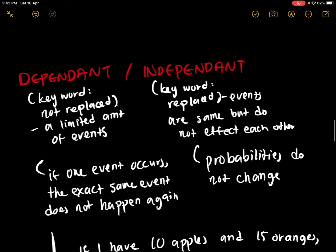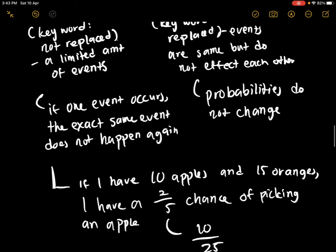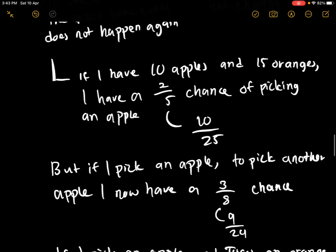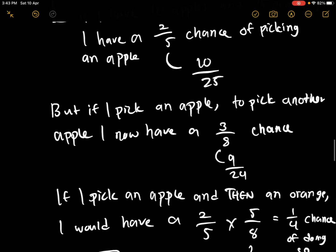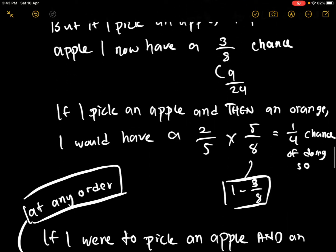For dependent events, the outcome is affected by the event before it. For example, if I have 10 apples and 15 oranges, I have a 2 over 5 chance of picking an apple because there are 10 out of 25 fruits. However, if I pick an apple and then want to pick another apple, I will have a 9 over 24 chance. That's because there are 9 apples left and 24 fruits left — I already took 1 apple out. If I were to pick an apple and then an orange, I have a 2 over 5 times 5 over 8 chance, which is 1 over 4.